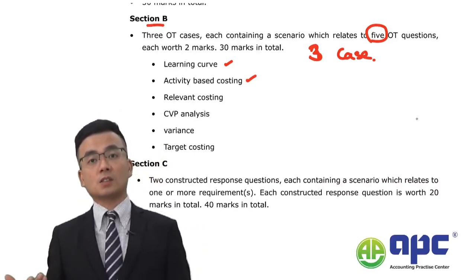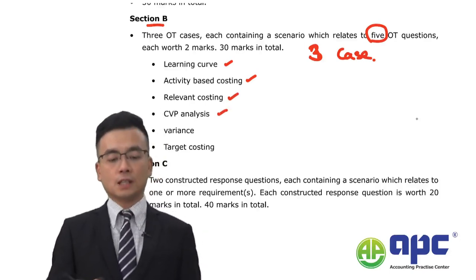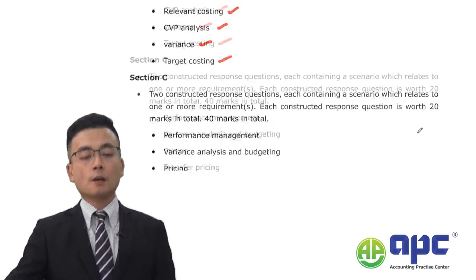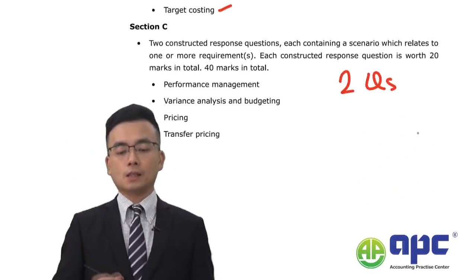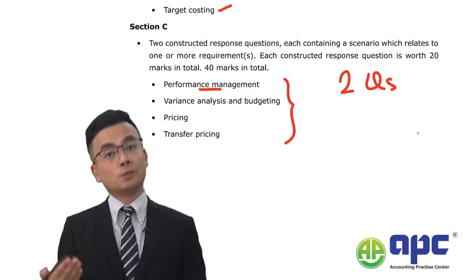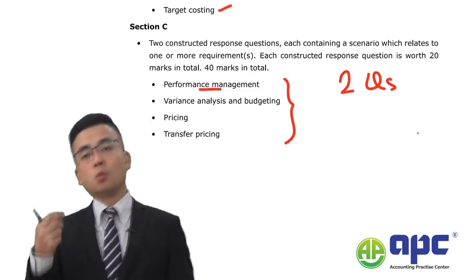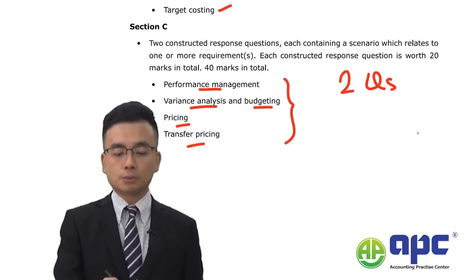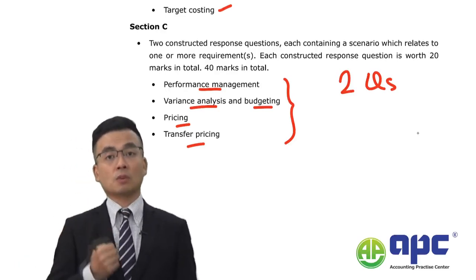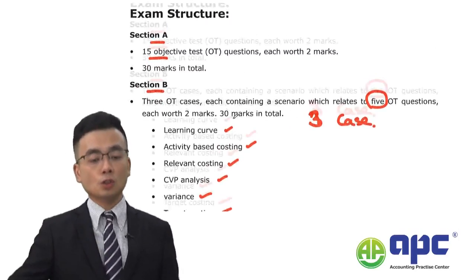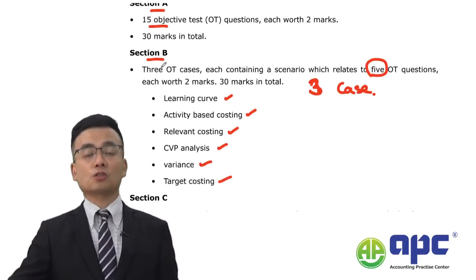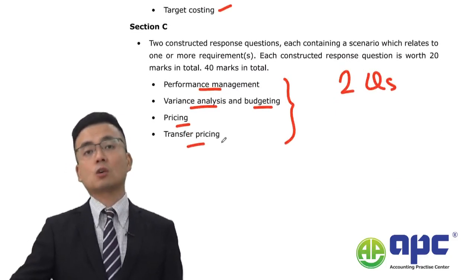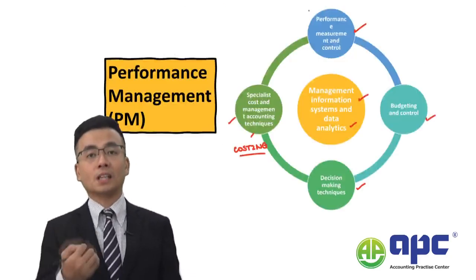Topics likely tested in Section B each exam include ABC, relevant costing, cost-volume-profit analysis, variance analysis, and target costing. For Section C, there will be two questions. You may be given performance measurement requiring number calculations — one sentence roughly equals one mark. Key areas include variance analysis and budgeting, pricing decisions, and transfer pricing. My advice: know these key areas, study past exam questions well, and practice enough Section C questions so you encounter similar questions to those in the actual exam.